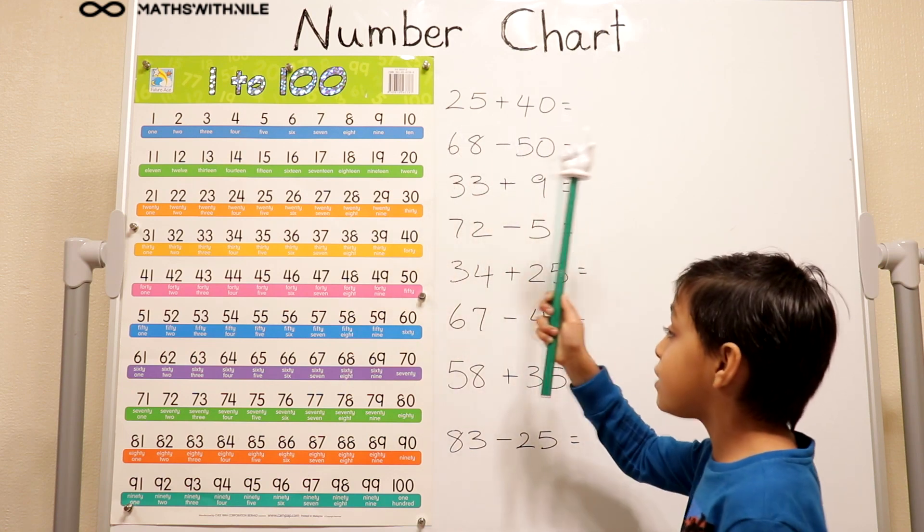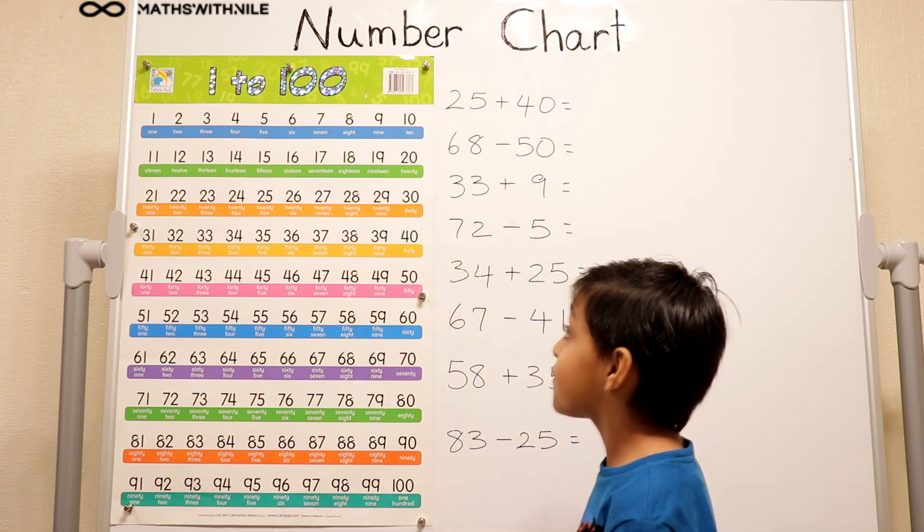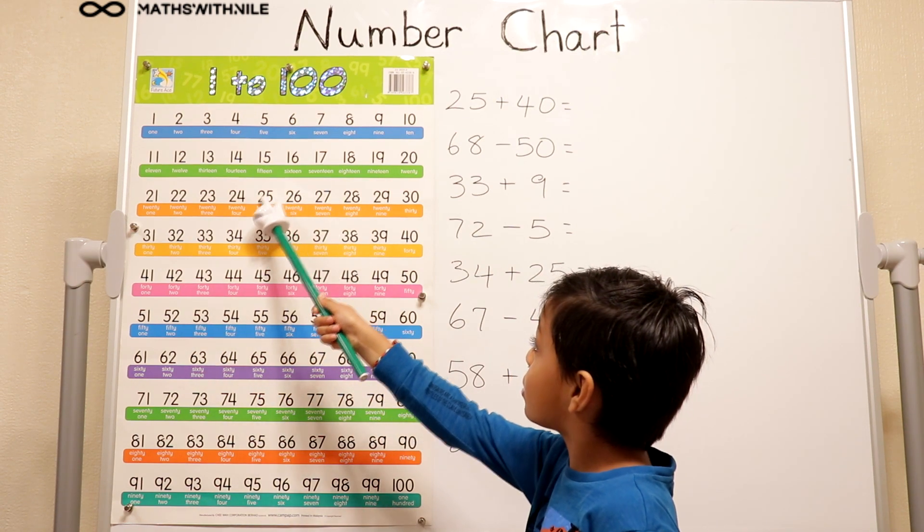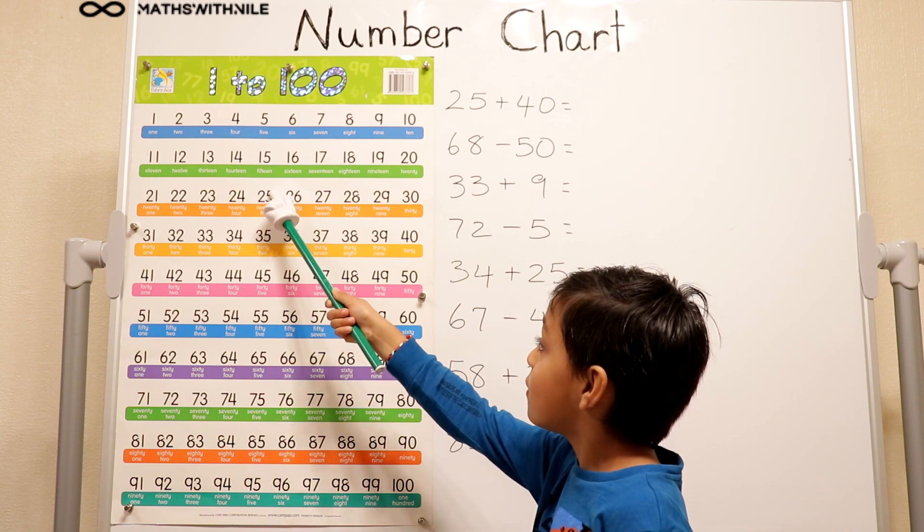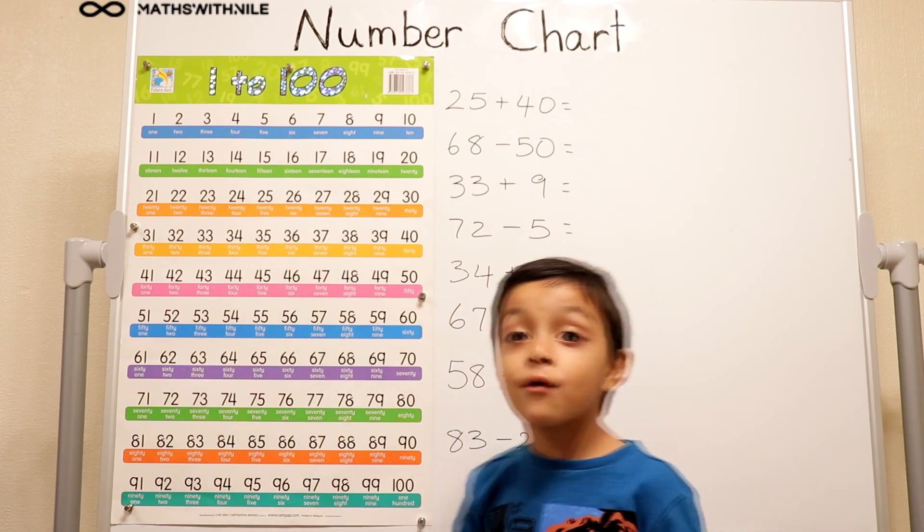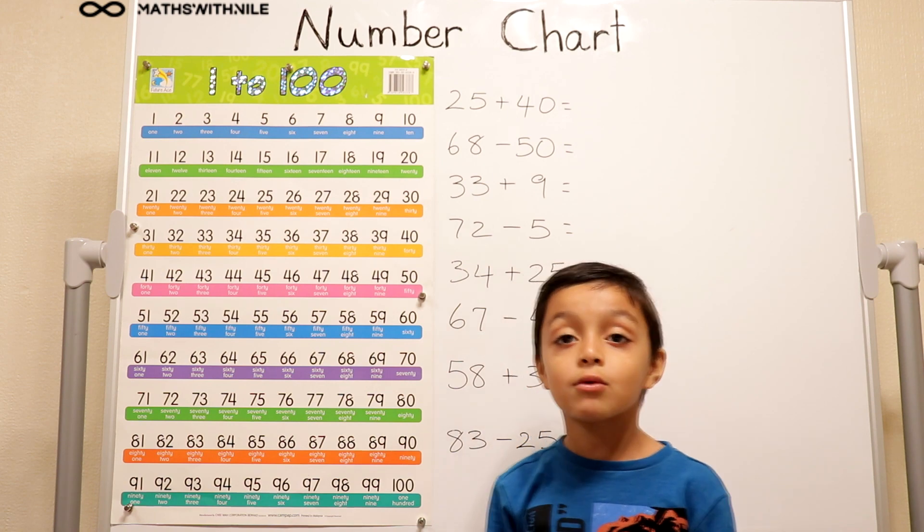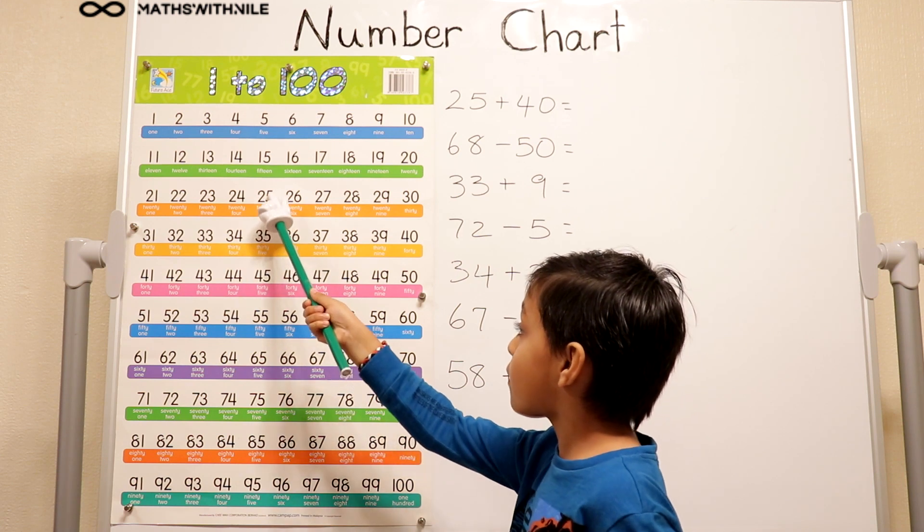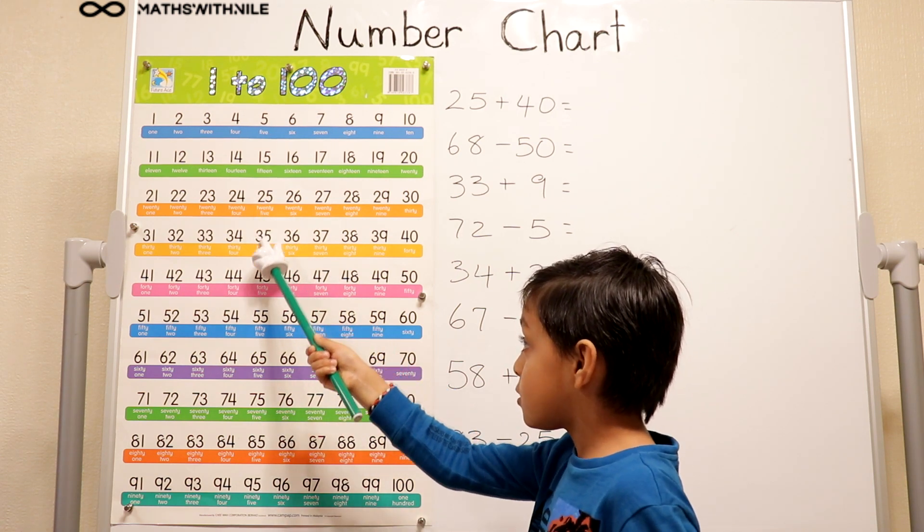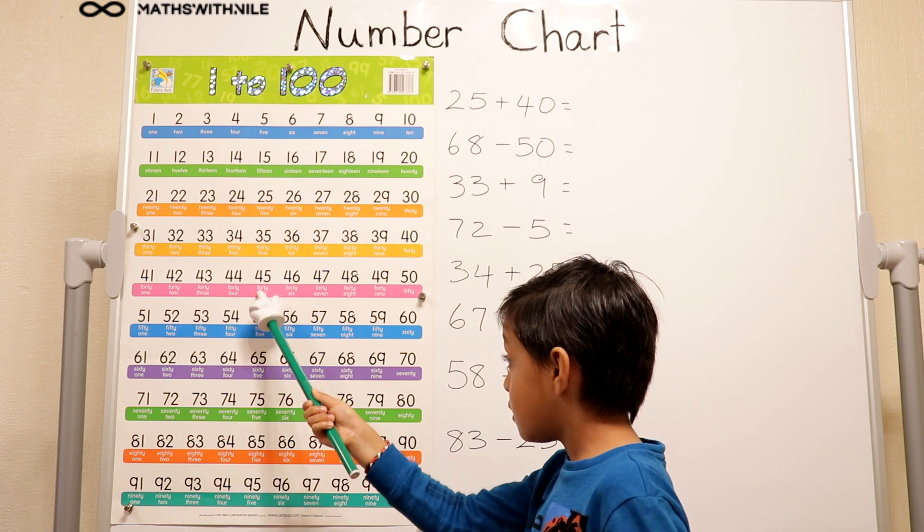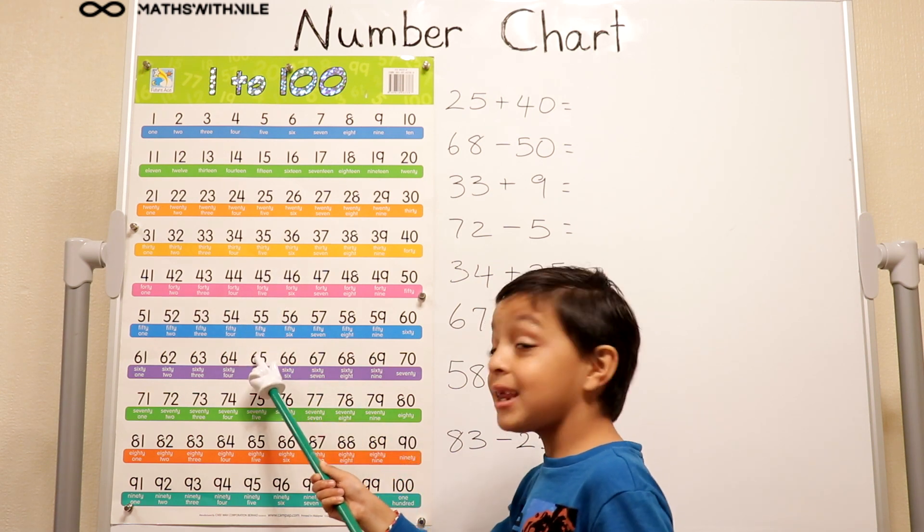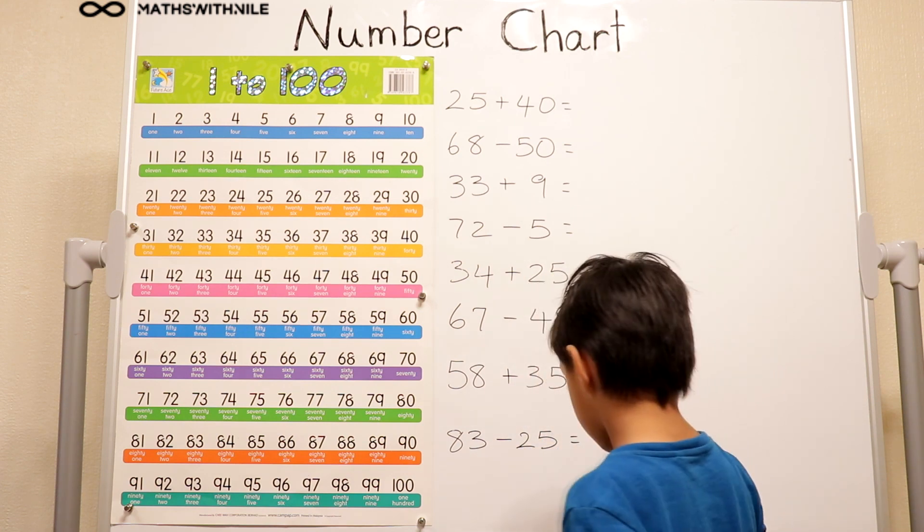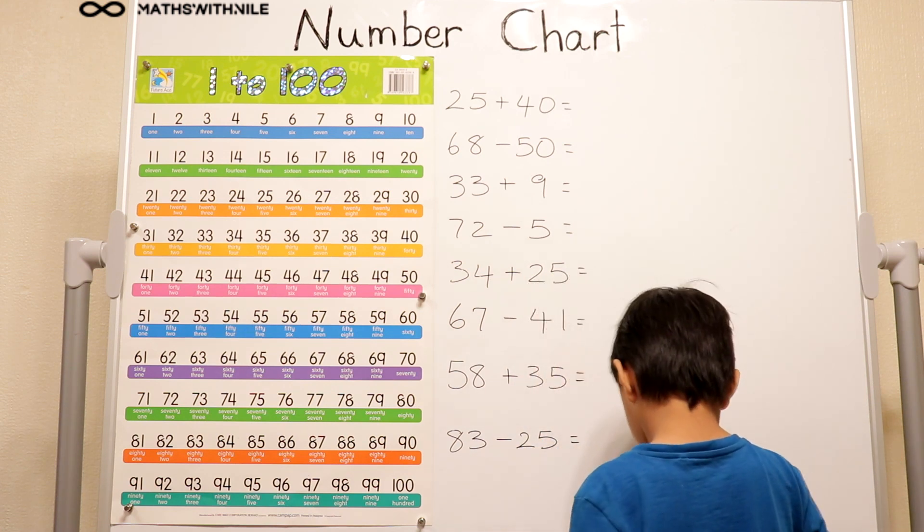25 plus 40. So first we have to find 25 which is here. And then we have to go down 4 times. Why? Because 4 lots of 10 equals 40. Okay. So 25, 10, 20, 30, 40. And it equals 65. Okay good. Put your answer up there quickly. 65.